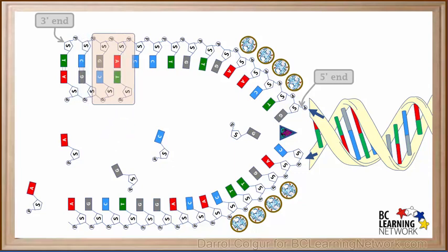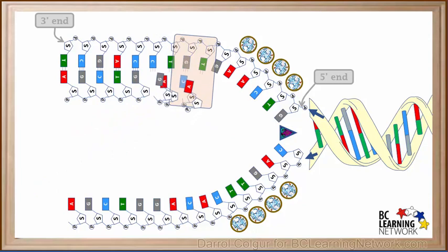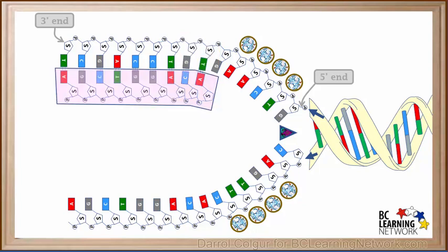Now a nucleotide with thymine moves in and the DNA polymerase bonds it to the new strand. Now one with guanine moves in and pairs up with cytosine. And it's bonded to the new strand. The process continues to the right on the top strand until more of the new nucleotides are added to the new strand by the DNA polymerase. And a new section of a strand of DNA has been formed.